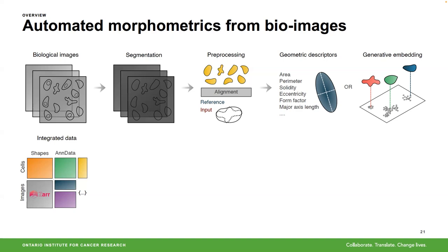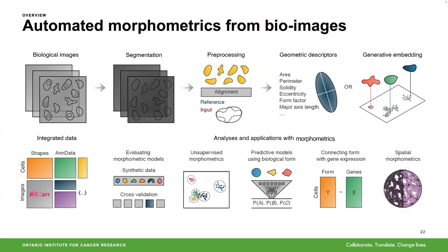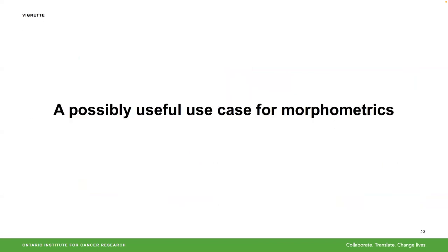What can you do with shape and size? Quite a lot. First, it serves as QC for segmentation data — if you've segmented some arbitrary spatial bioimaging data, you can use morphometrics for quality control. You can also use it for single-cell and supervised morphometrics, build predictive models, start connecting gene expression to biological form, and do spatial morphometrics. That's the basic premise of the tool.